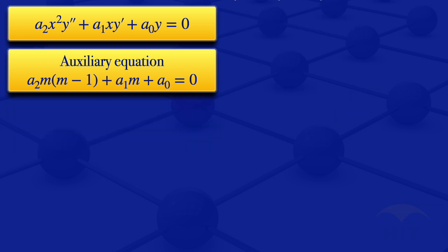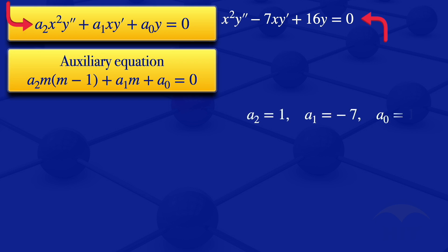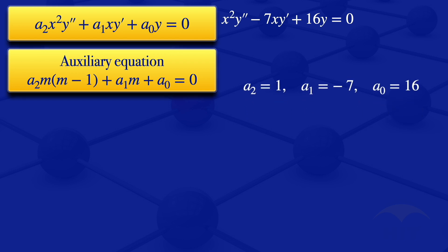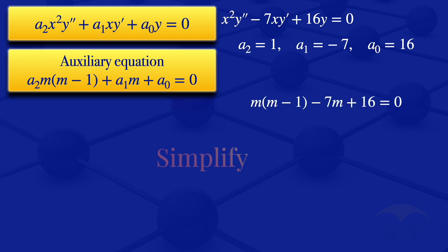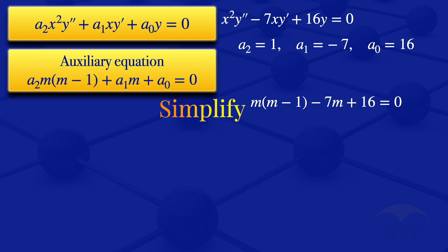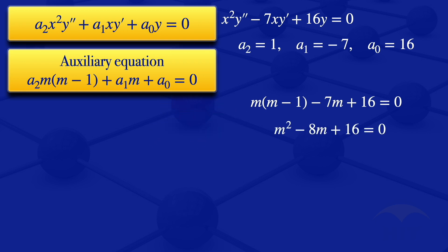Moving to the second question: x squared times y double prime minus 7x times y prime plus 16y equals 0. Comparing with the standard form, a2 equals 1, a1 equals minus 7, and a0 equals 16. Substituting into the auxiliary equation gives m(m minus 1) minus 7m plus 16 equals 0, which simplifies to m squared minus 8m plus 16 equals 0.